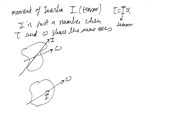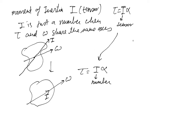They should be aligned on the same axis. In that case, we can still write tau equals I alpha, but now I reduces to just a number. The tensor, which looks like a matrix, reduces to a scalar. So tau is the torque vector, alpha is the angular acceleration vector, and I is just a number.